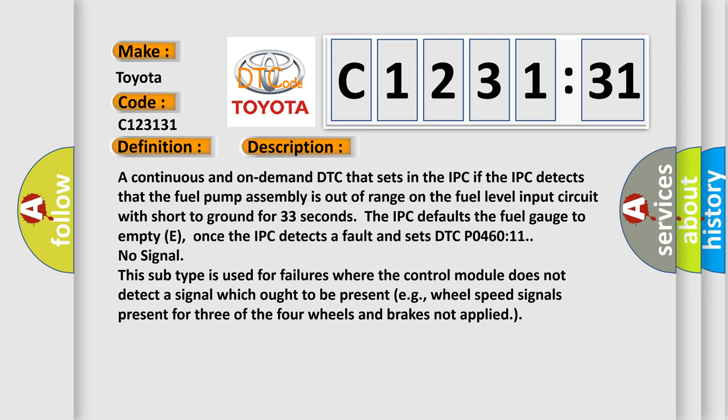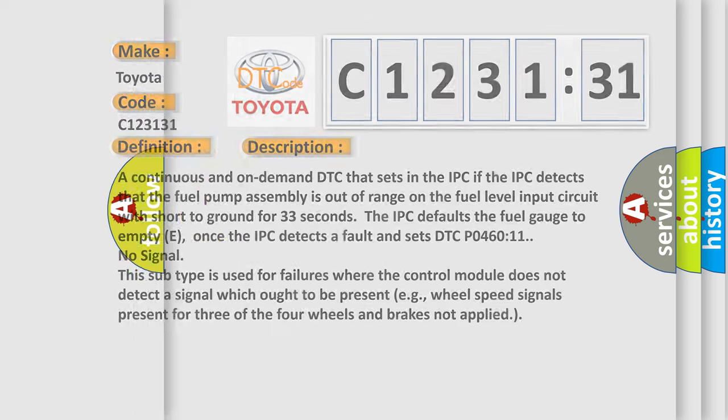A continuous and on-demand DTC that sets in the IPC if the IPC detects that the fuel pump assembly is out of range on the fuel level input circuit with short to ground for 33 seconds. The IPC defaults the fuel gauge to empty (E), once the IPC detects a fault and sets DTC P046011 no signal. This subtype is used for failures where the control module does not detect a signal which ought to be present, e.g., wheel speed signals present for three of the four wheels and brakes not applied.